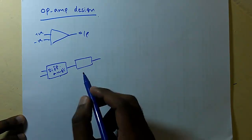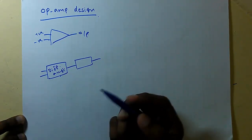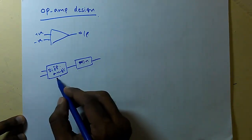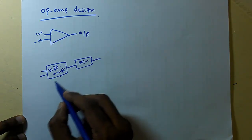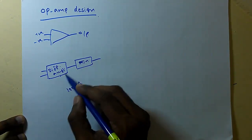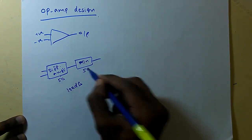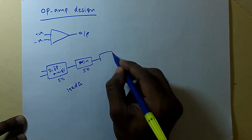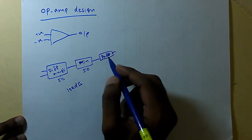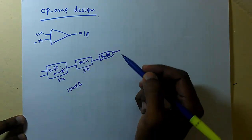Generally in an operational amplifier, the first stage will be a differential amplifier, then there will be one more gain stage, because we will not get much gain from one amplifier alone. For example, if we need 100 dB gain, we might get 50 dB from one amplifier and 50 dB from another. Finally, we will need a buffer stage. An op-amp without a buffer stage is called a transconductance amplifier.